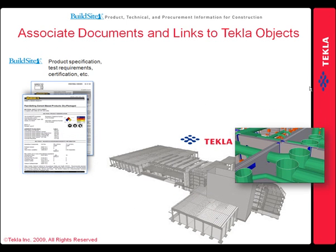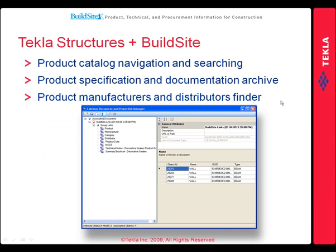Now that we know what BuildSite can do, let's take a look at what happens when we add embedded search to a world-leading building information modeling solution like Tekla Structures. From within the Tekla Structures modeling environment, you can navigate the product catalog and search for product information, then link them to the appropriate model objects. This allows you the ability to archive specification and documentation information in a three-dimensional context, as well as locate manufacturers and distributors from the 3D model.